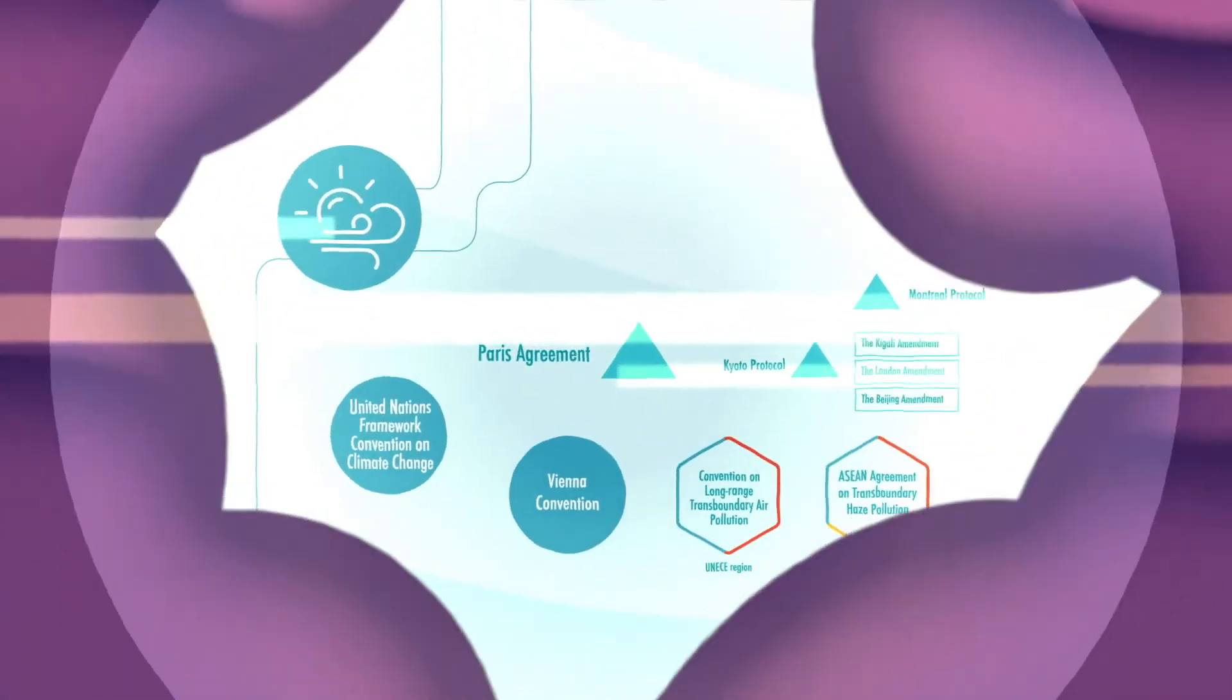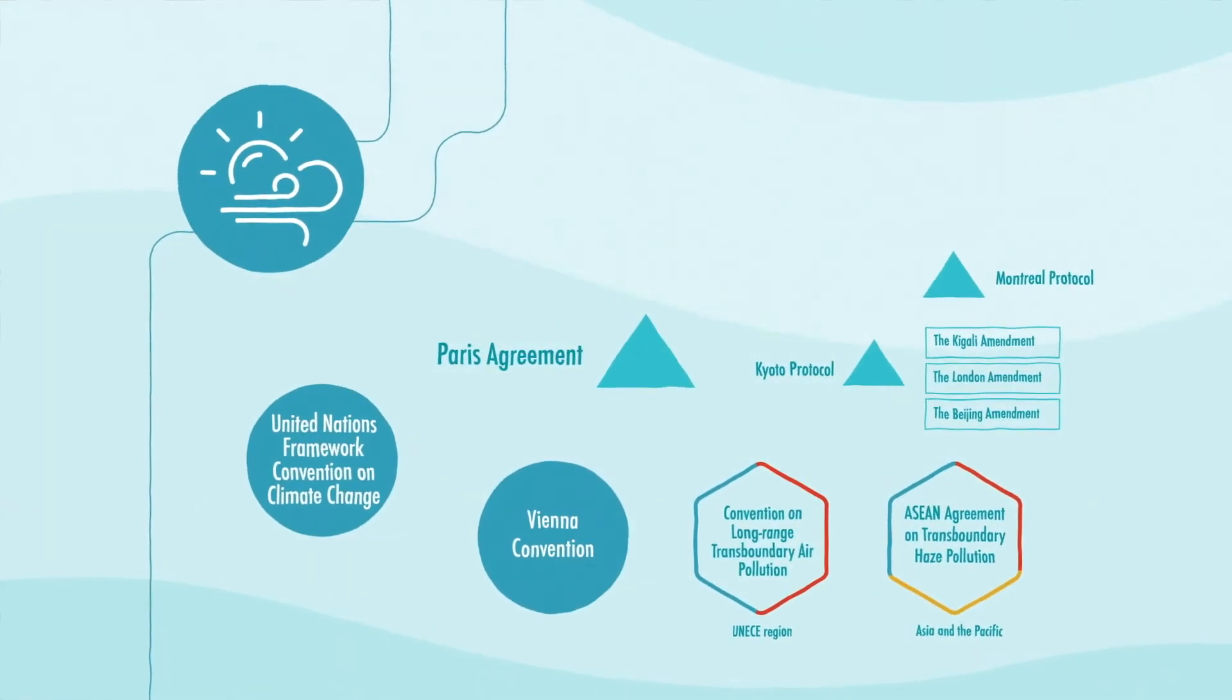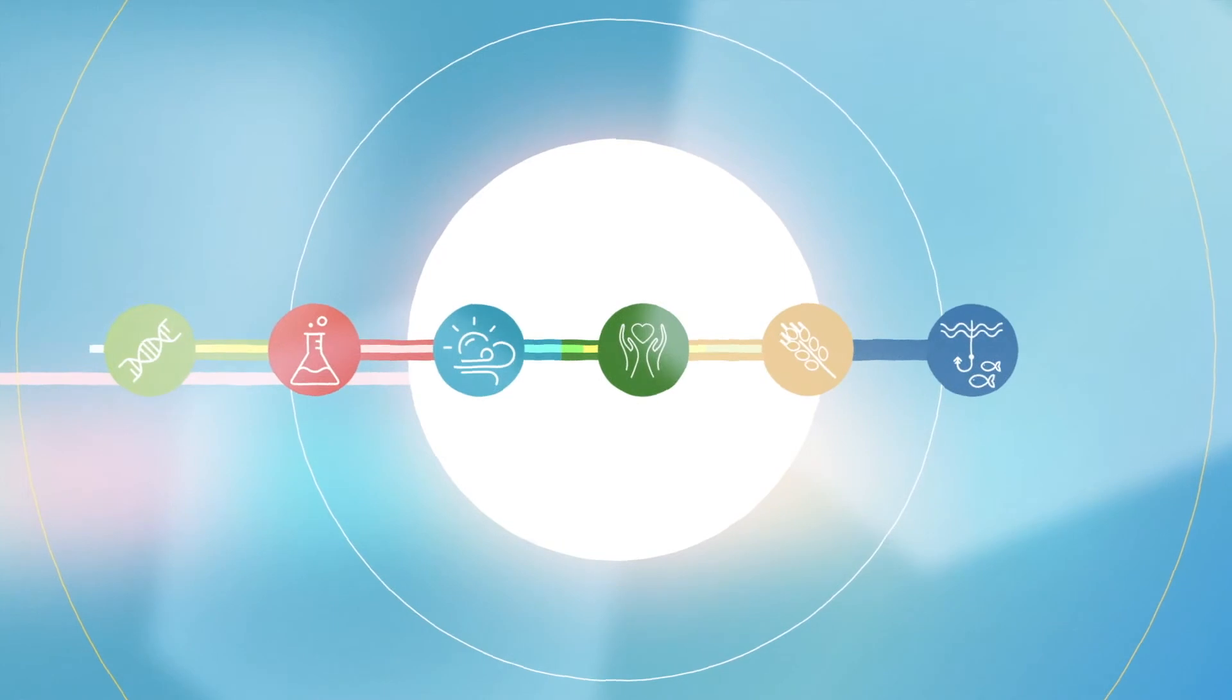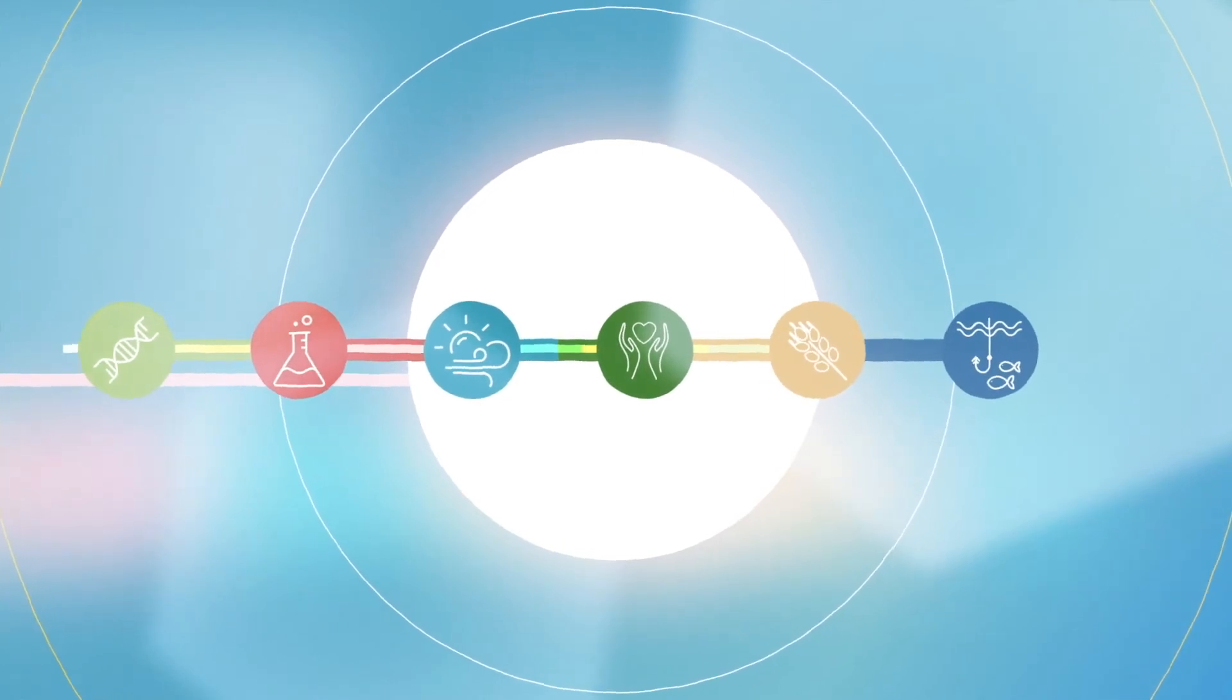Meeting the reduction targets set out in the Paris Agreement will therefore require action to limit plastic production. While MEAs play a significant role in dealing with plastics, they cannot be successful without countries adopting plastics legislation.